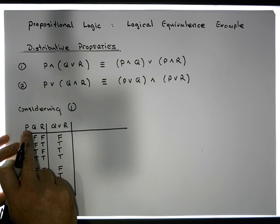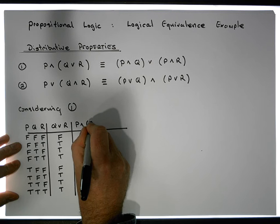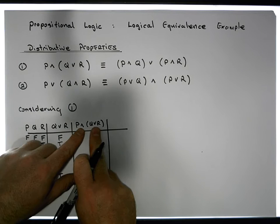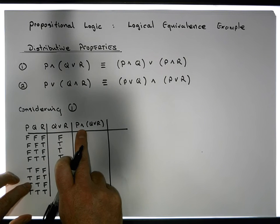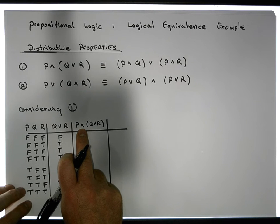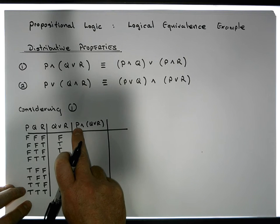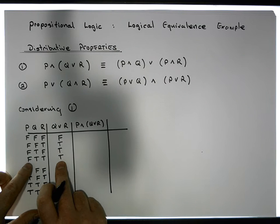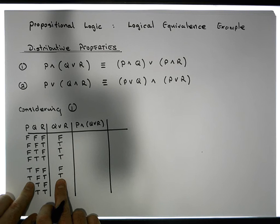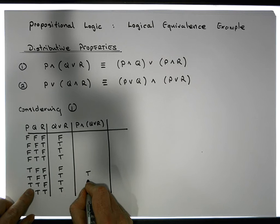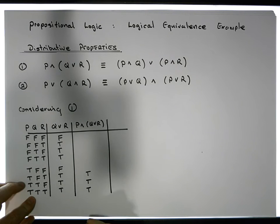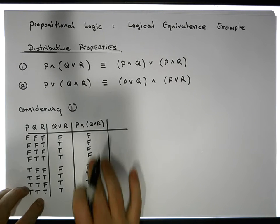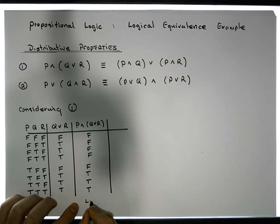Now that we've evaluated Q OR R, we can AND it with P. An AND only ever gives us true when both operands are simultaneously true. Looking at the P column and the Q OR R column, we find true-true pairs at rows five, six, seven, and eight. Those give true; everywhere else is false. This column is the left-hand side of the expression fully evaluated.